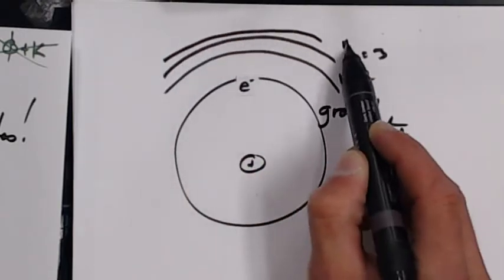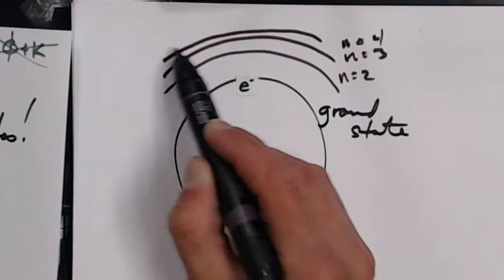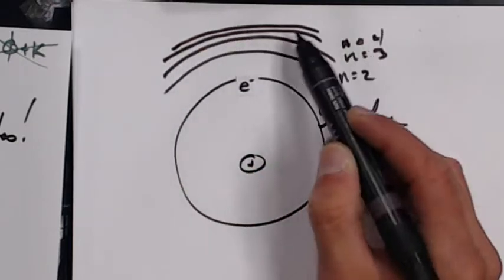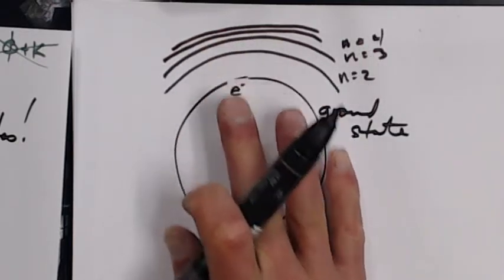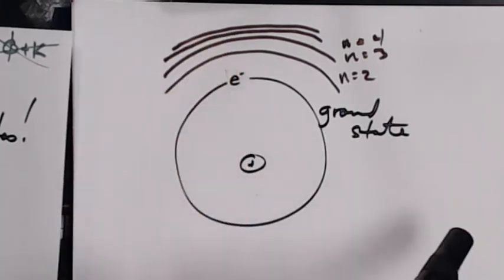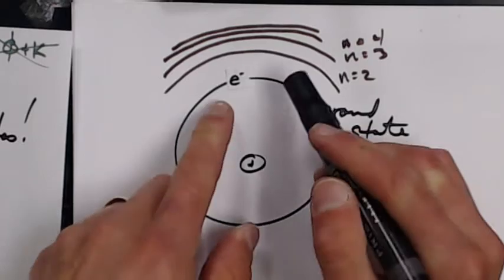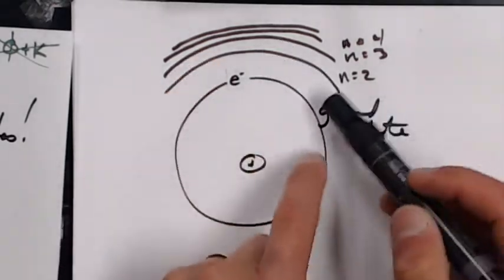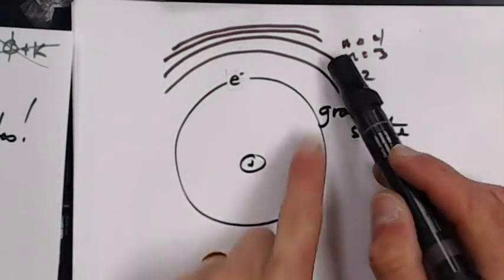These are all different places for the electron to exist because it exists in a quantum thing where it's either in number one, or in number two, or in number three. It's not in between.